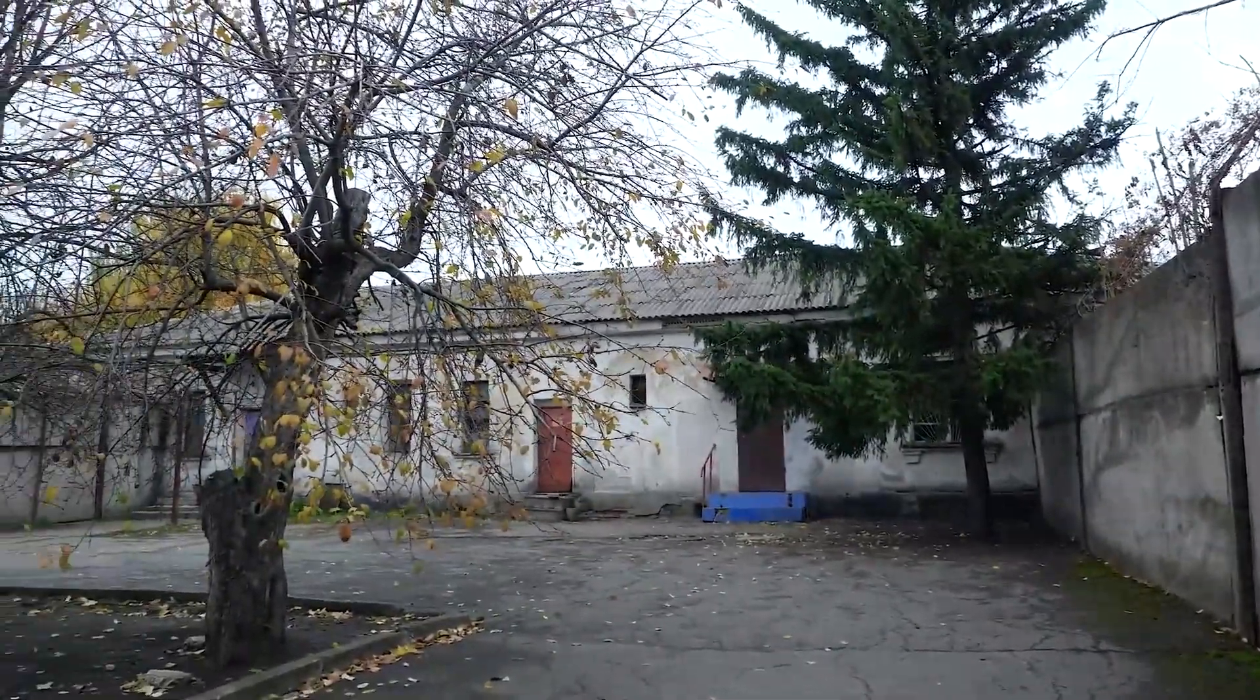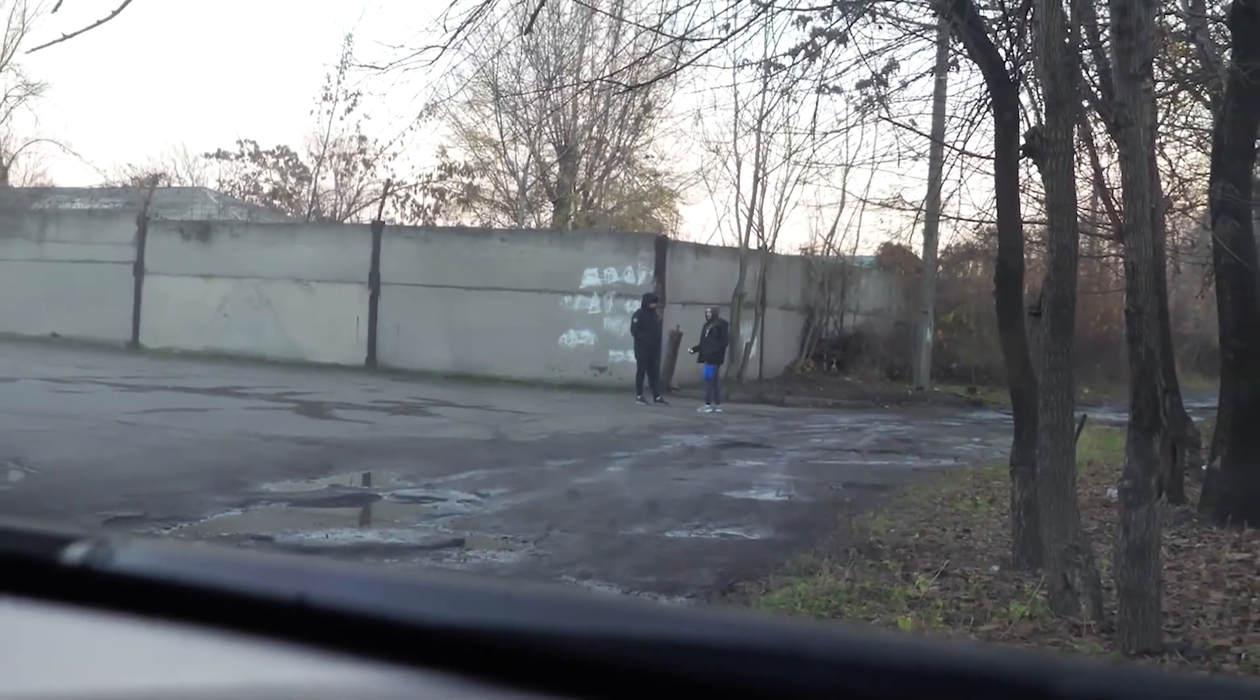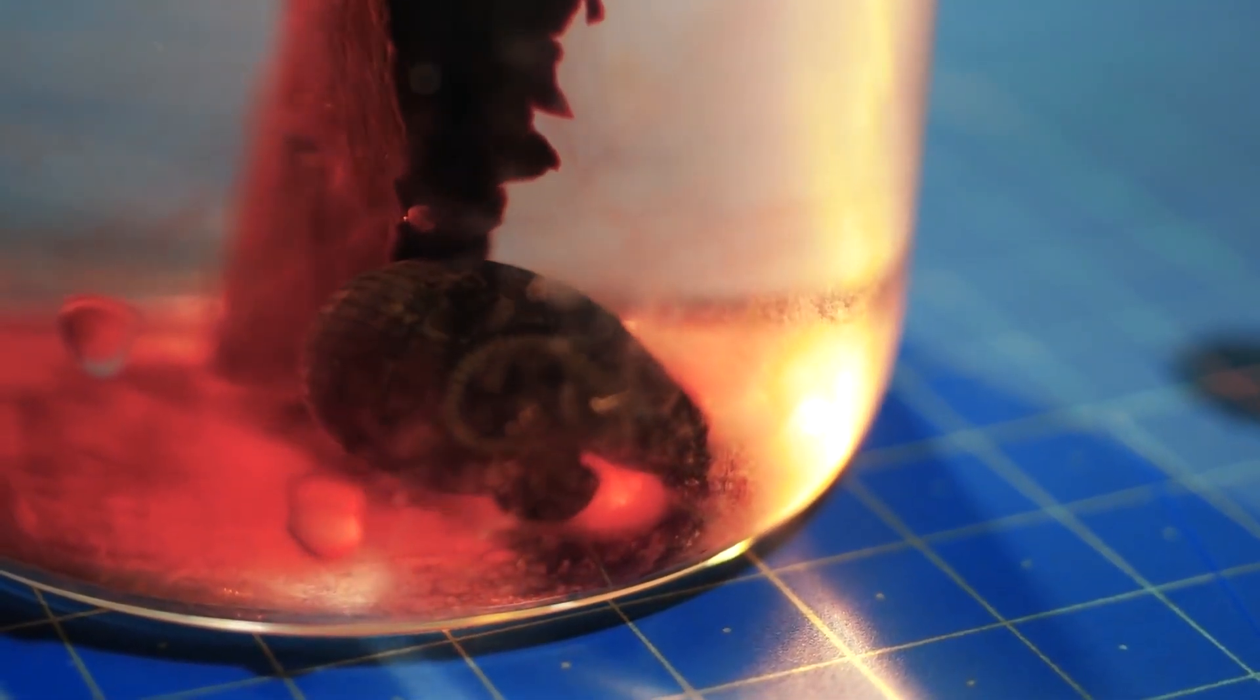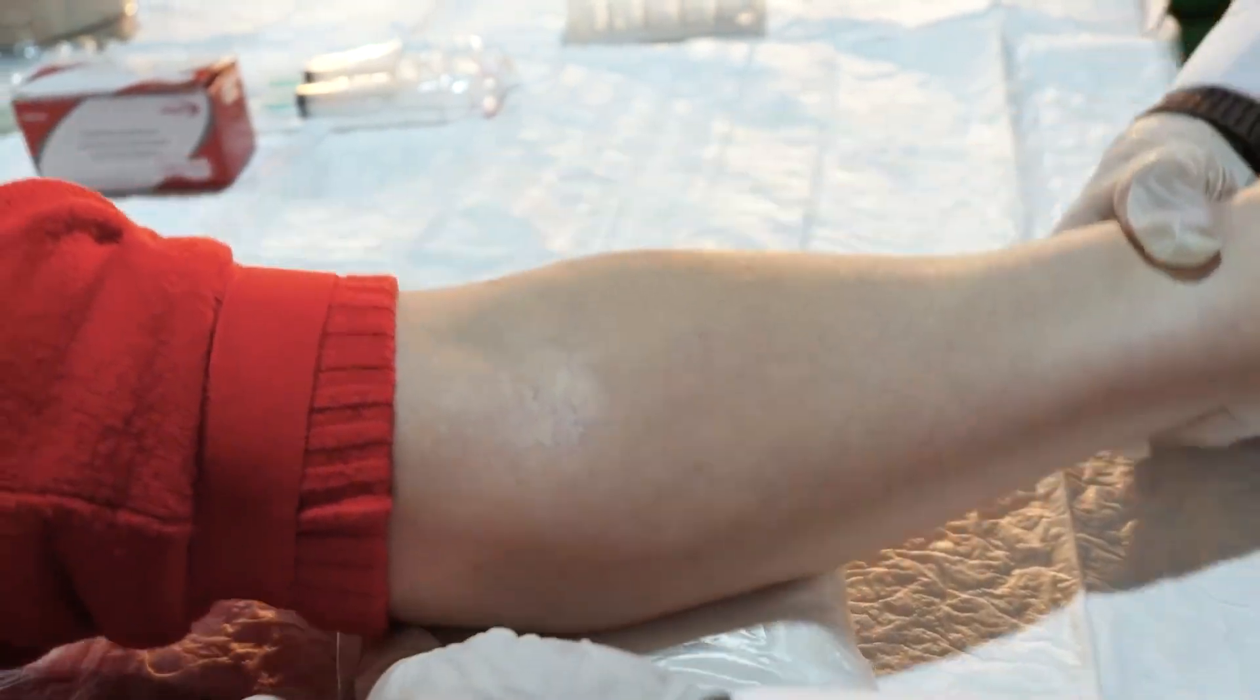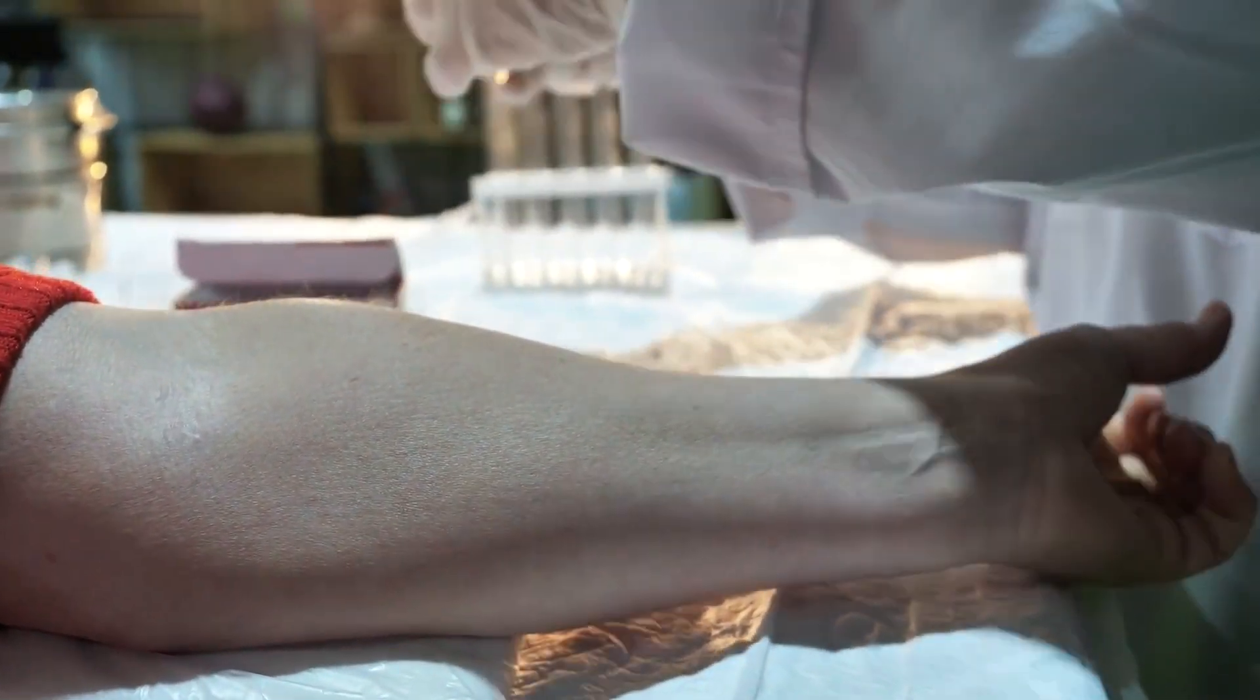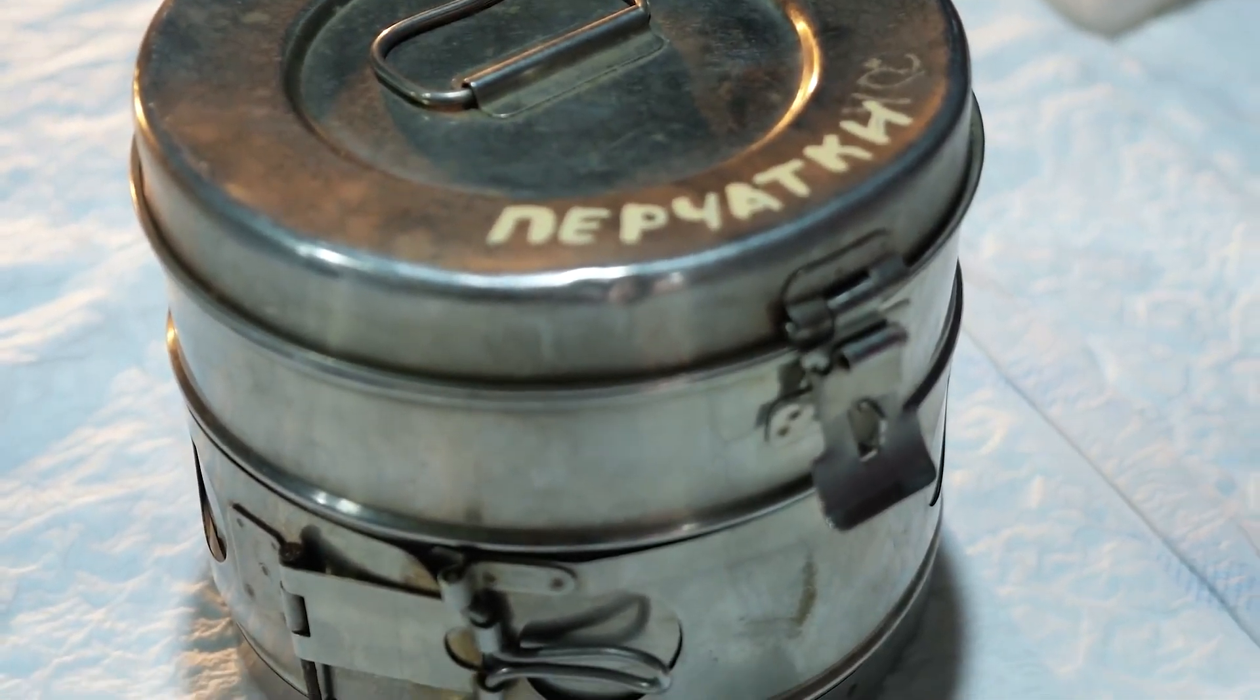Then we went to the dispensary and arranged a meeting with a man who is being treated for drug addiction. He agreed to give us some of his blood. From previous experiments, it was clear that ideally the leech should be sucked directly to the person, but if not possible, blood collection should be done in a sterile environment.